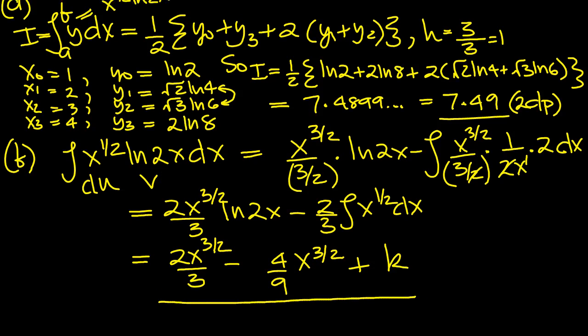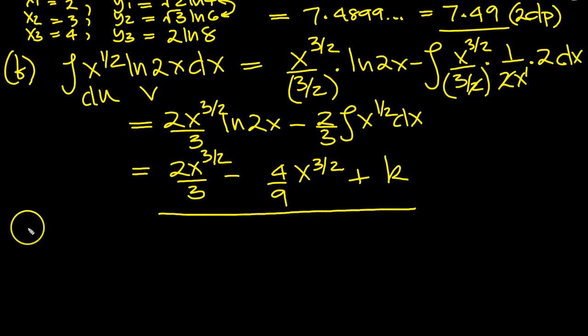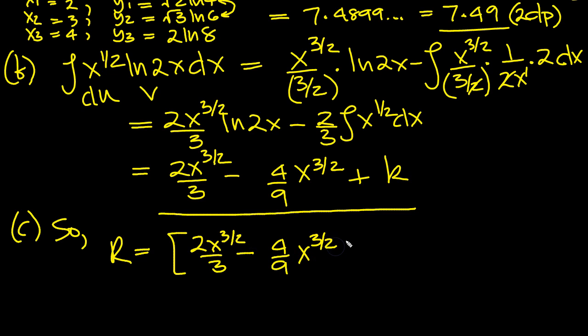So now part c, we need to find R exactly in the form a log 2 plus b. So R is equal to, well it's just this integral here, which is this value. So I'm just going to write the value. That was ln 2x, which I need to write. That does make a difference, of course. And then 2x minus, and the same goes for here. ln 2x minus 4 ninths x to the 3 over 2. And that's between 1 and 4. So we need to work that out.